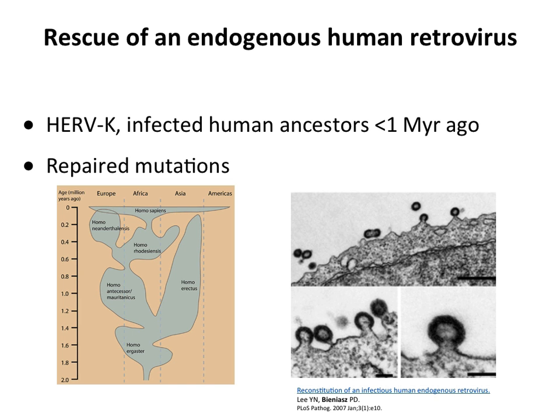One of our endogenous retroviruses, HERV-K, is the closest to a viable virus in our genome. In 2007, a group at the Rockefeller took the sequence of HERV-K, repaired all the mutations using the known human genome sequence, and got virus particles coming out of cells in culture — resurrecting a million-year-old retrovirus. HERV-K likely infected our ancestors around a million years ago, became endogenized, and eventually mutated so it no longer produced virions.